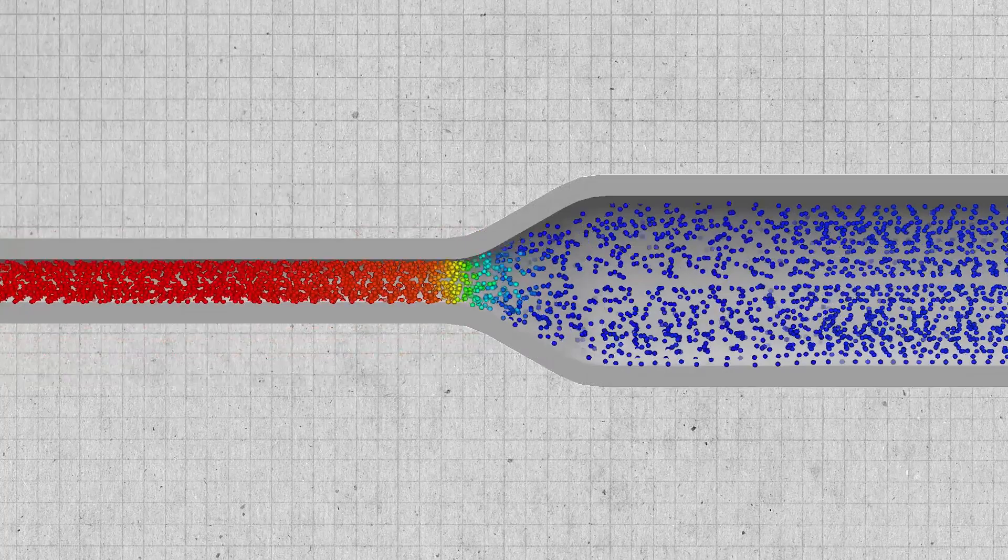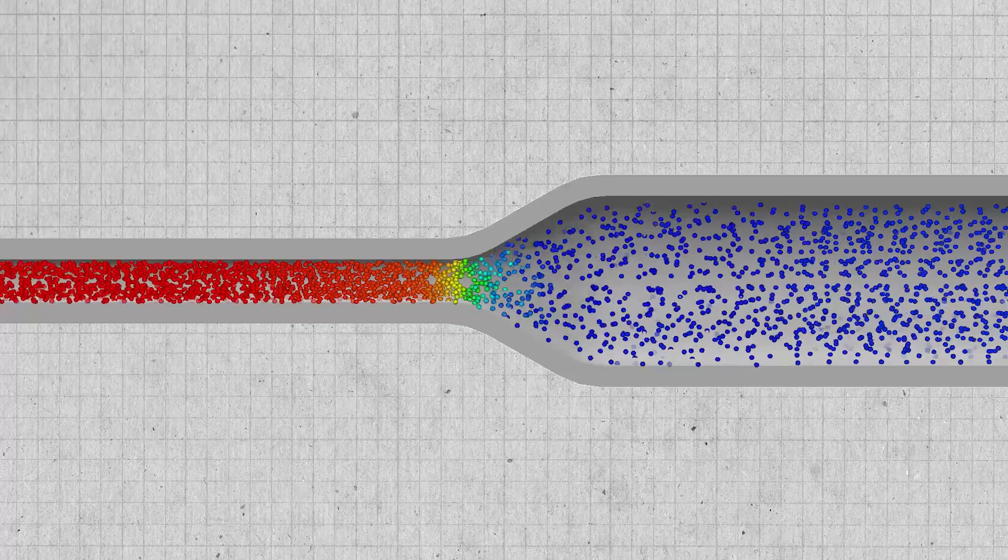If you have a pipe with flow that's already traveling at the speed of sound, you actually have to expand the pipe to accelerate it. This isn't very intuitive, but I'll share the best explanation I've heard.